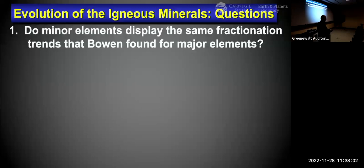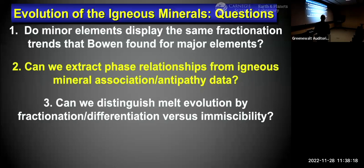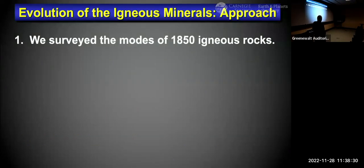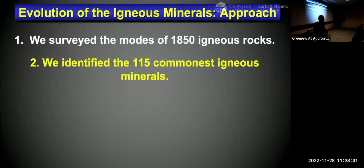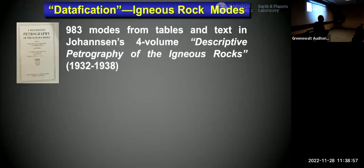We surveyed the modes — mineral contents — of 1,850 igneous rocks, identified 115 minerals (the most common primary minerals in igneous rocks), and analyzed them using various informatics techniques: network analysis, Louvain community detection, and so forth. This involved months of work going page by page through Johannsen's classic Petrography of the Igneous Rocks from the 1930s and through Woolley et al.'s four-volume Alkaline Rocks and Carbonatites of the World, plus other sources. This yielded a spreadsheet with 1,850 rows — each a different rock — and 115 columns representing the minerals present.